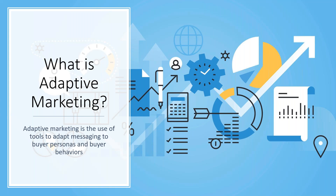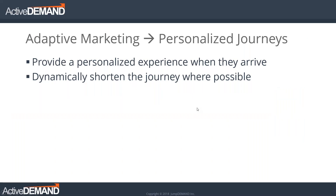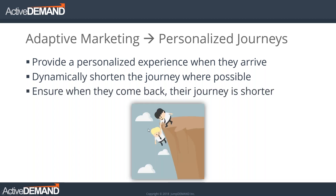It finds the pen once your hand actually picks it up. That's a similar analogy to adaptive marketing — we don't have to know all the journeys and do all the calculations, but we can adapt to behaviors when the person is engaging with us. The idea of adaptive marketing is personalized journeys where, through technology, we adapt and provide personal experiences and contextual content as they walk along the journey, and we dynamically shorten the journey where possible.